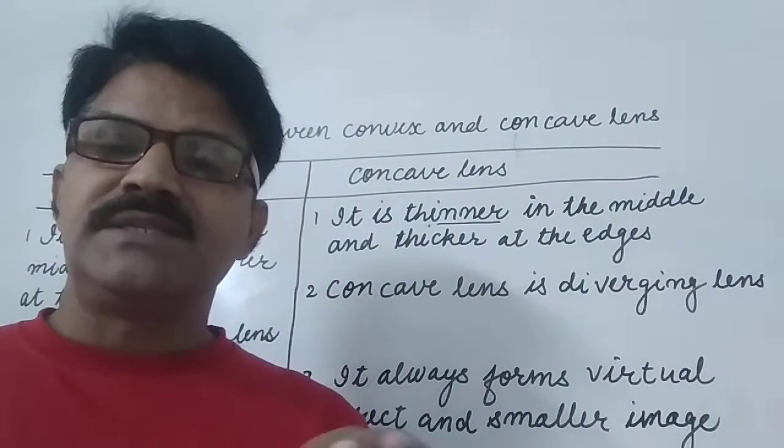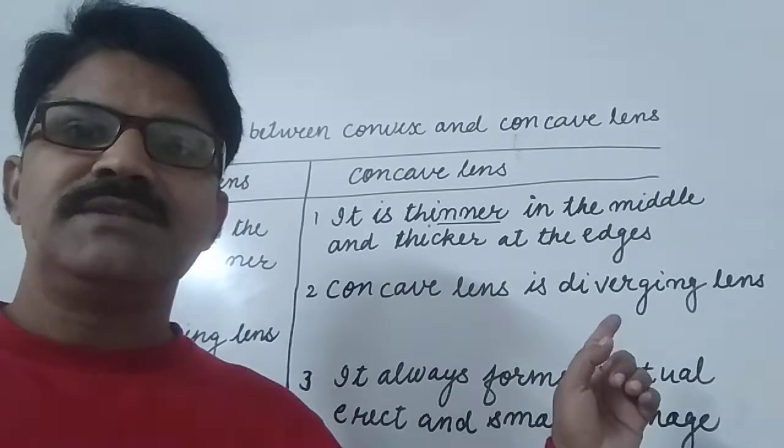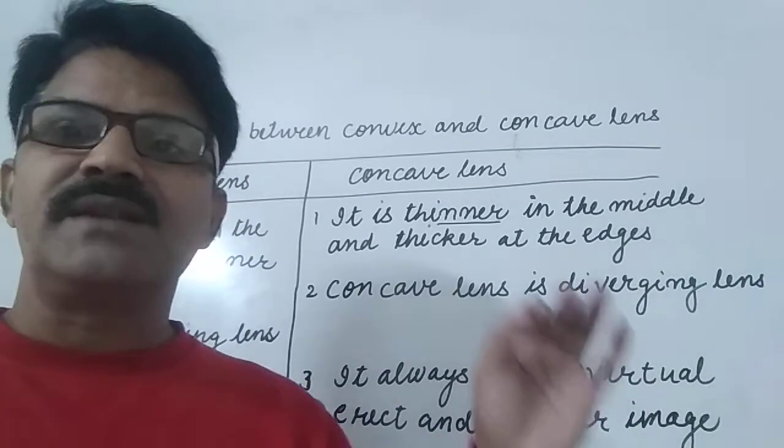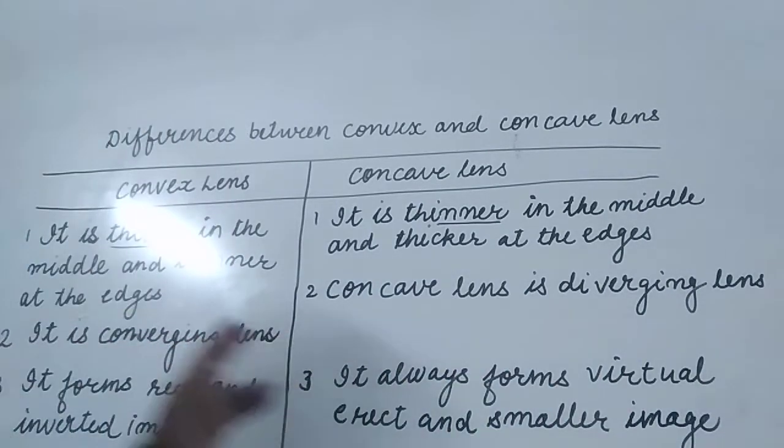Concave lens, it is thicker at the middle and thinner at the edge. Convex lens, it is thinner at the middle and thicker at the edge.